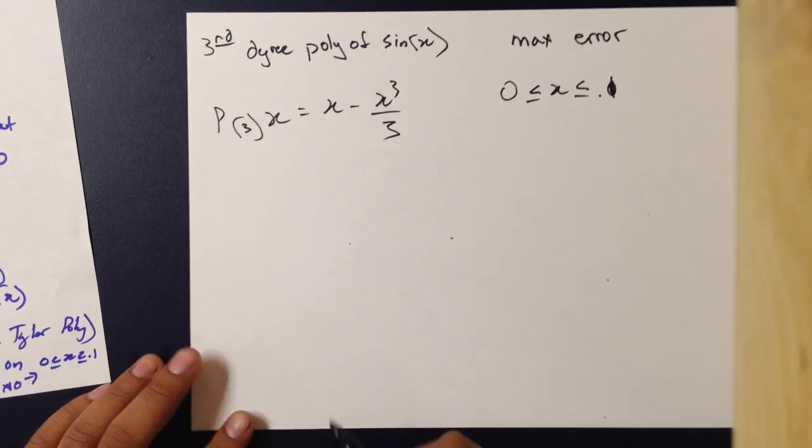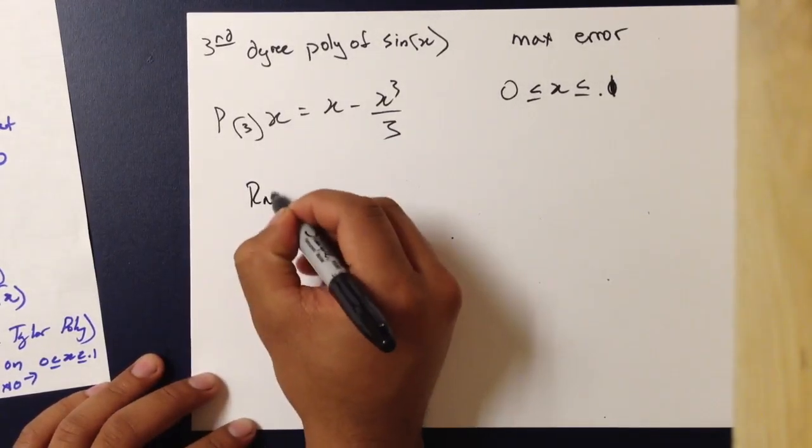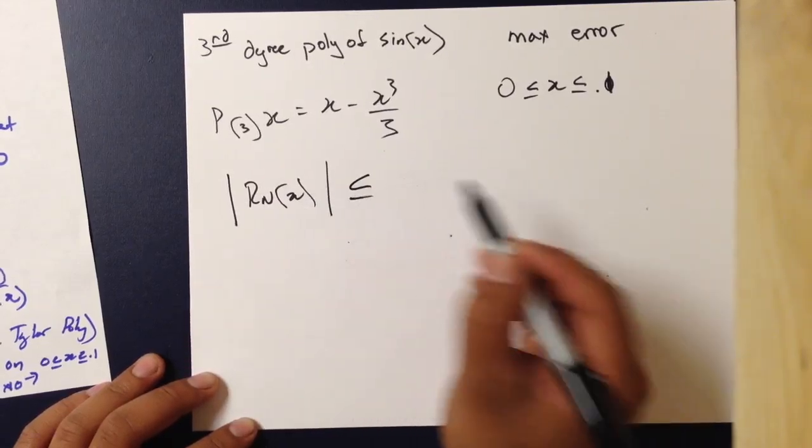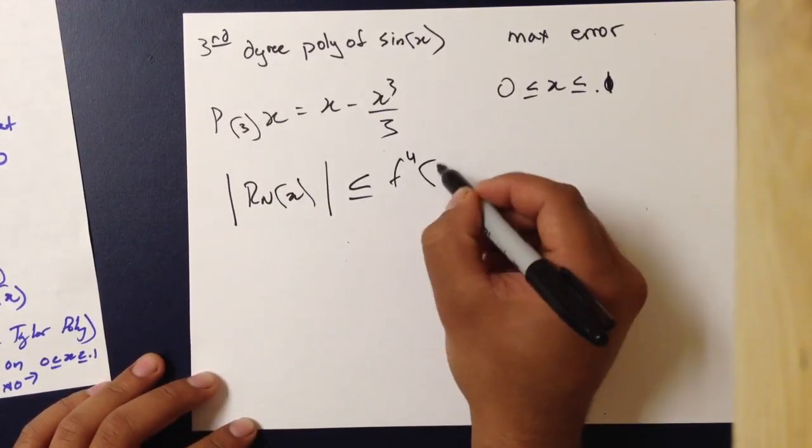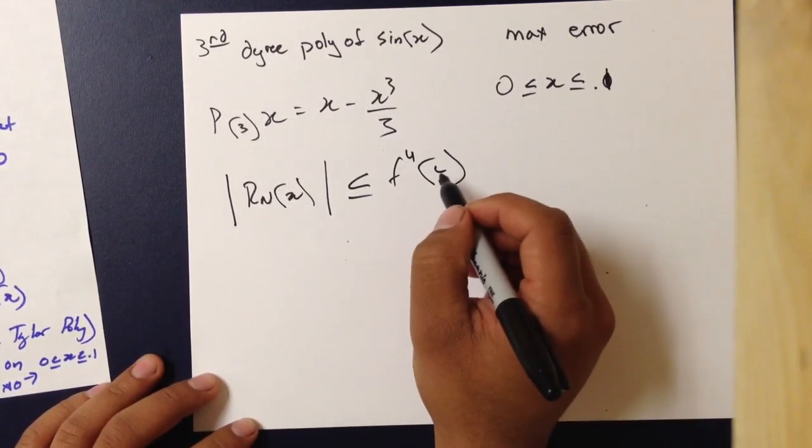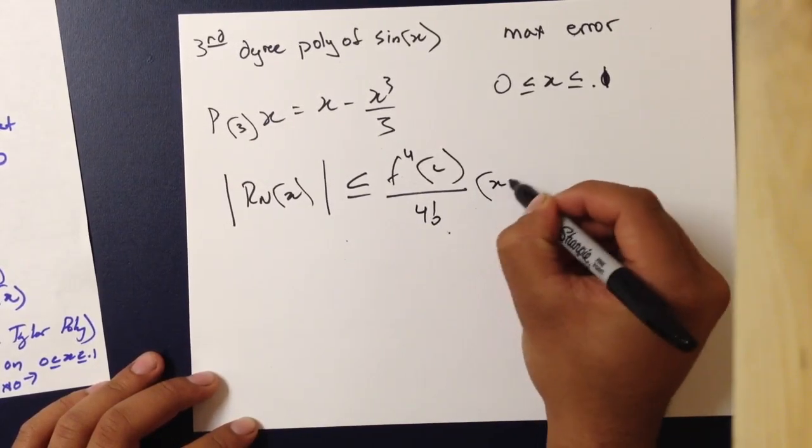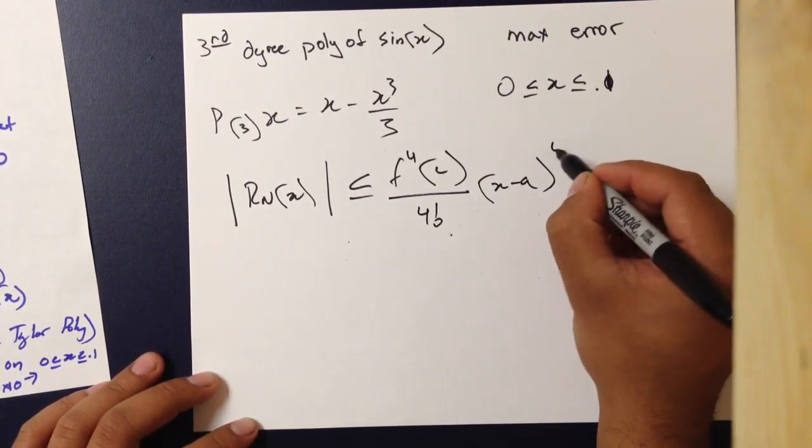So, looking at the formula, the remainder is less than or equal to the fourth derivative at some point c over 4 factorial times x minus a to the fourth power.